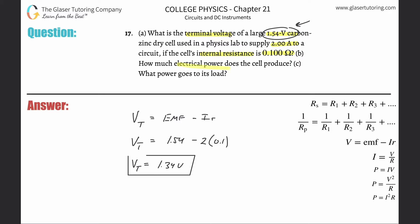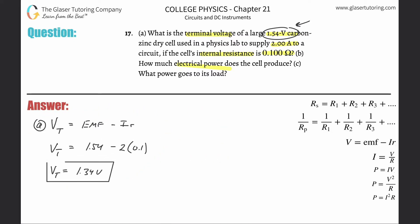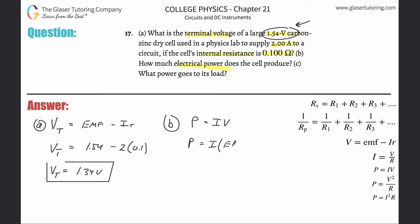Letter b: how much electrical power does the cell produce? The electrical power the cell actually produces is the theoretical maximum — not the usable amount — because some of it goes to overcoming internal resistance. We use P = IV, where for the total power we plug in the EMF as the voltage.